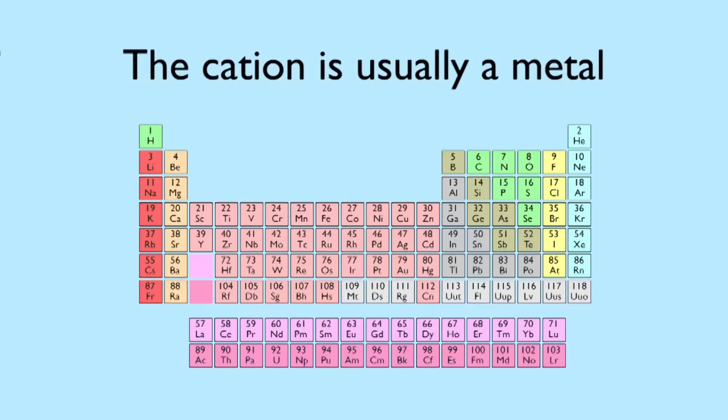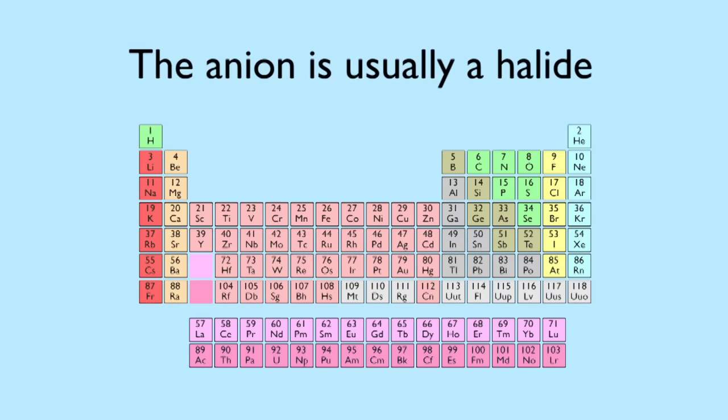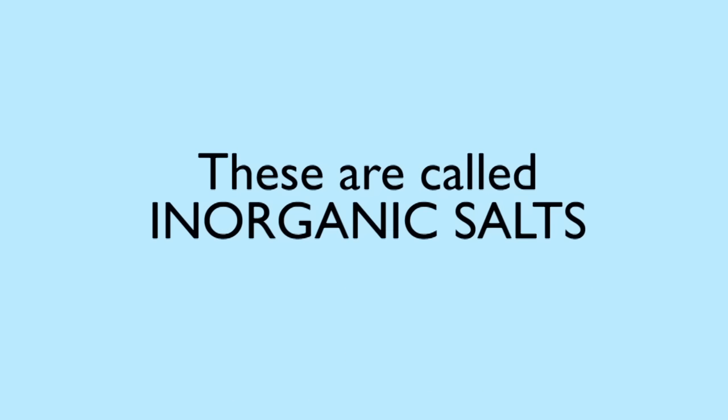The cation tends to be a metal and in many common examples is one from group 1 or 2 of the periodic table. The anion is commonly a halide from group 7 or a member of group 6. Salts made like this are called inorganic salts, but this is not always the case.